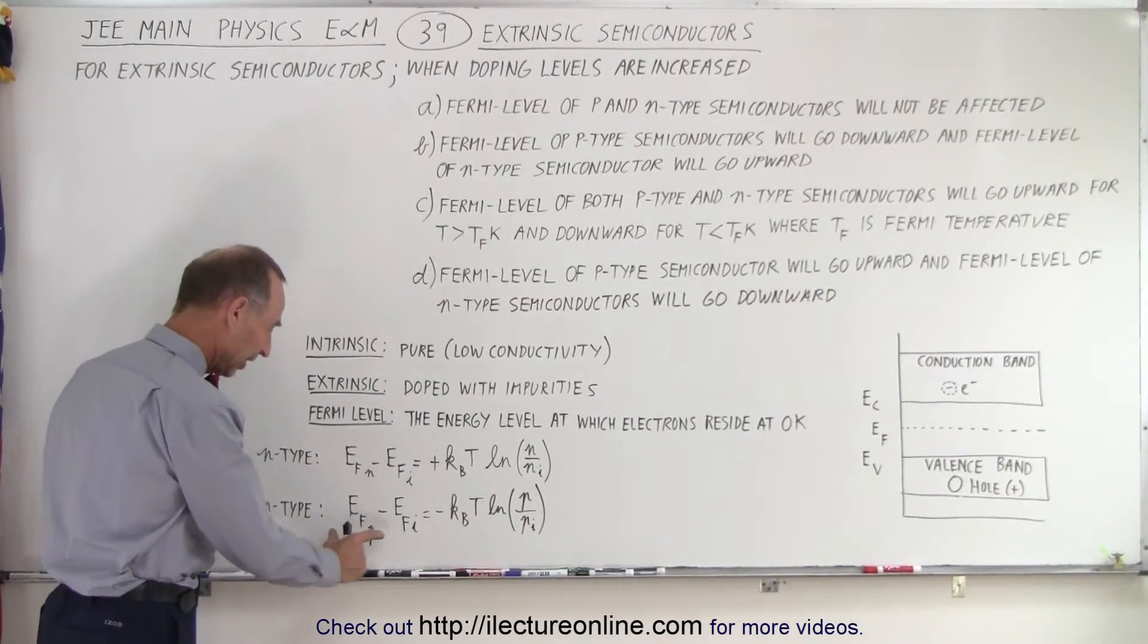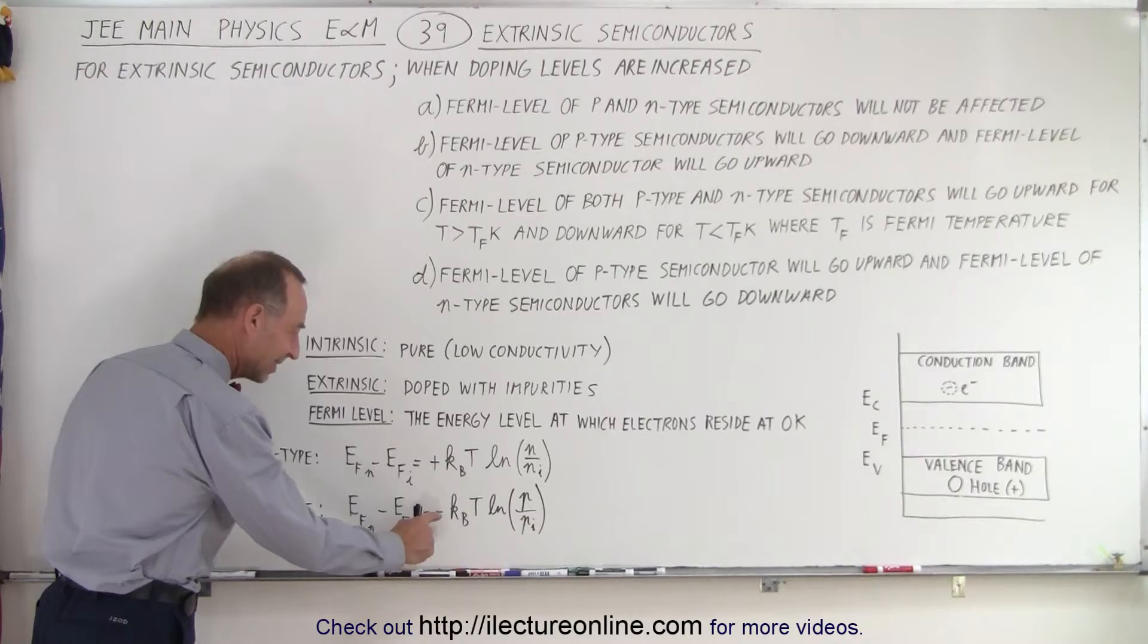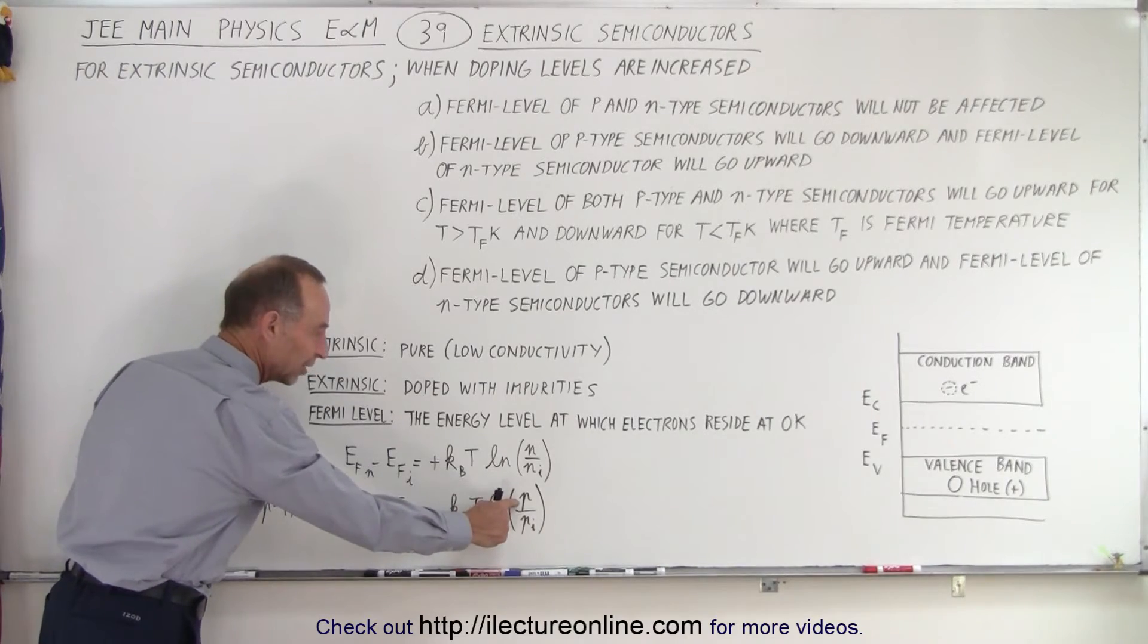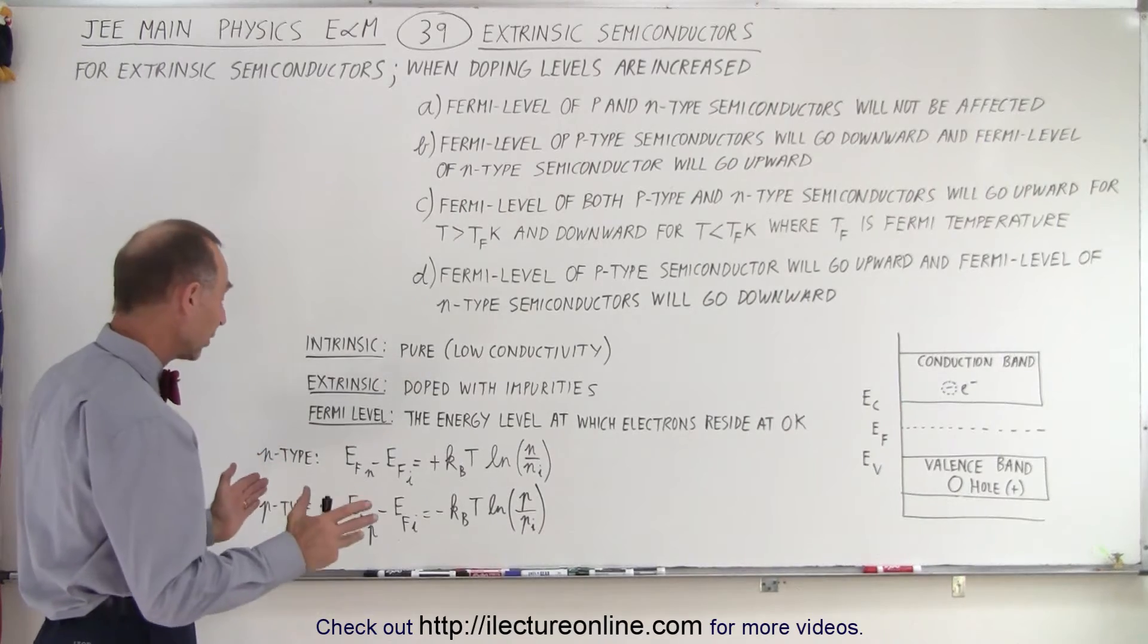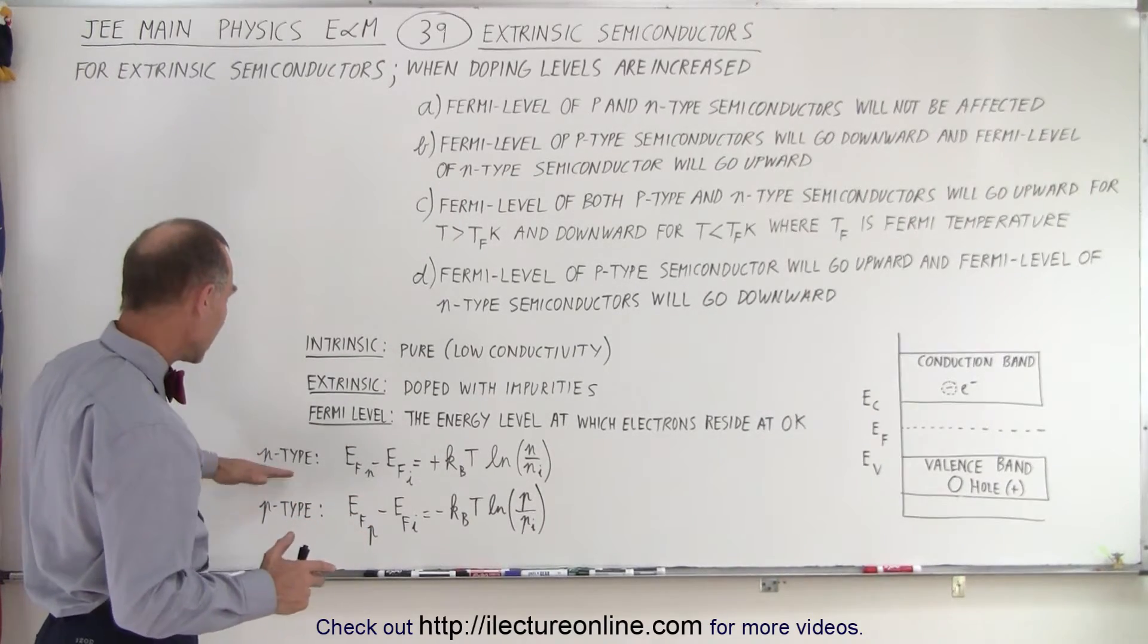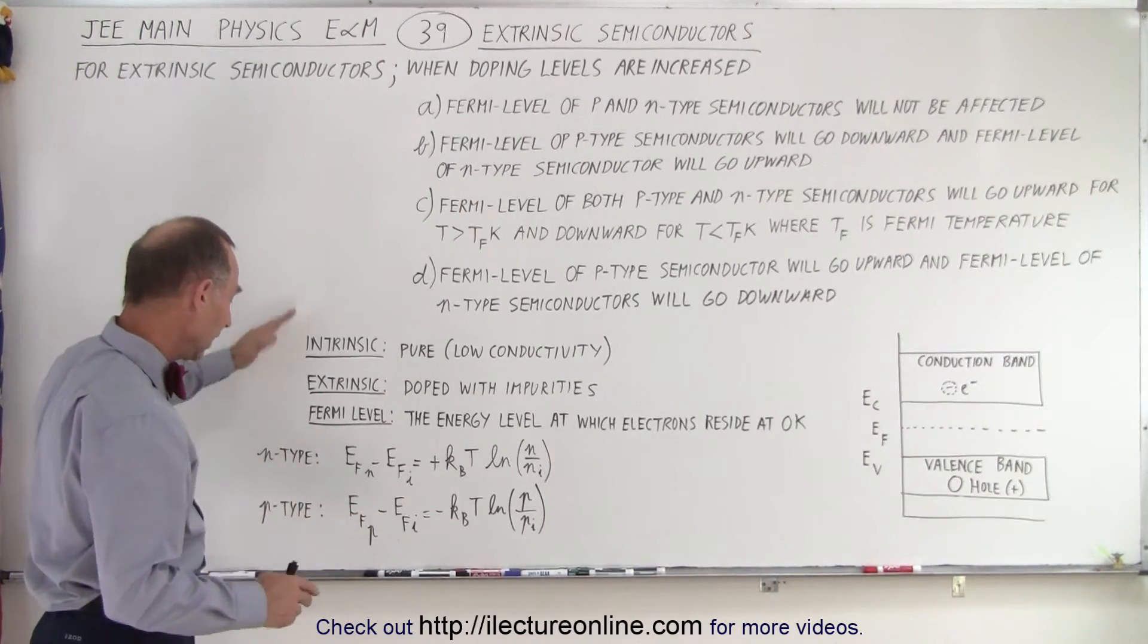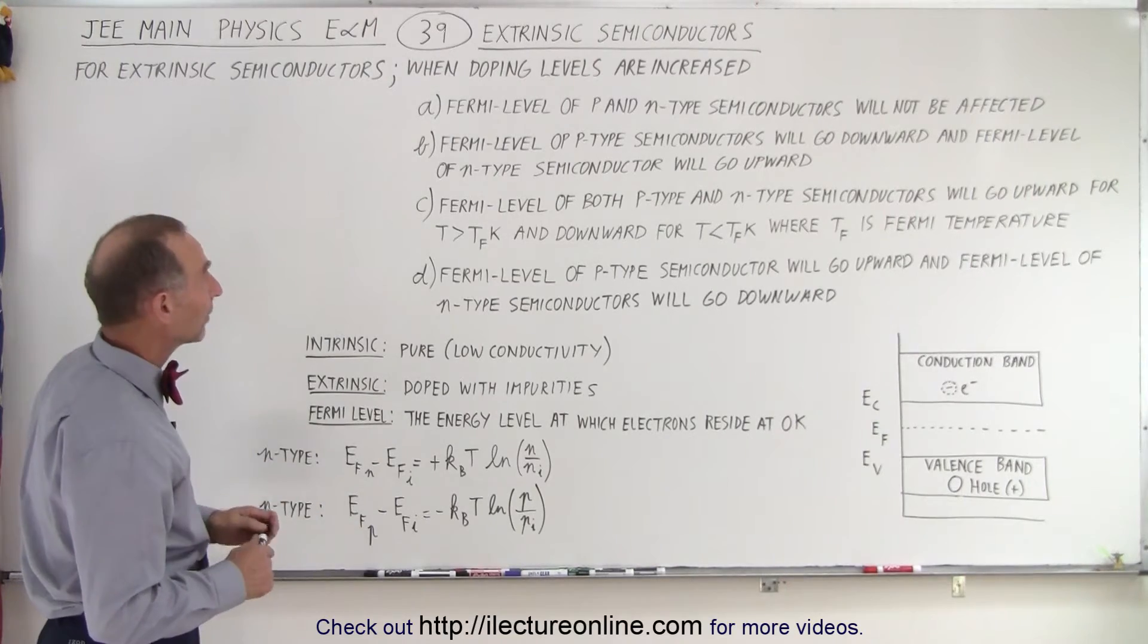Okay, so for p-type semiconductors, the difference in energy levels is actually negative if the doping is increased, if p is greater than p-initial. So from that, we can see that for n-type, the Fermi level goes up. And for p-type, the Fermi level goes down.